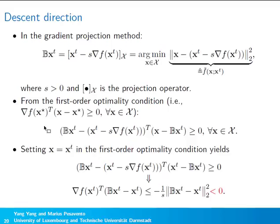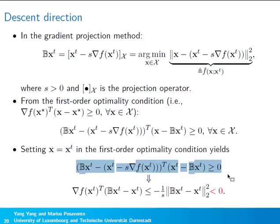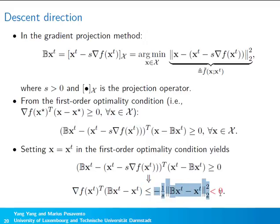We can verify that the gradient projection method yields a descent direction. Since bx_t is the optimal solution of the quadratic projection problem, the first-order optimality condition holds for any feasible point. Setting that point to x_t and simplifying, we find the inner product between the gradient of the objective and the update direction is bounded above by a quantity that is always negative.